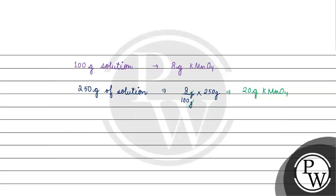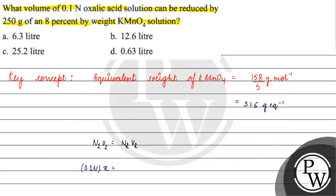The number of equivalents of KMnO4 will be equal to 20 grams divided by the equivalent weight, which is 31.6 grams per equivalent. This gives 20 by 31.6 equivalents.